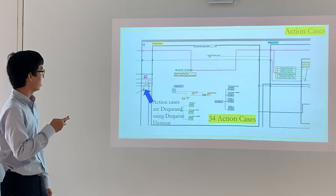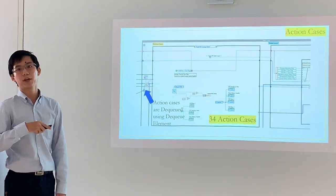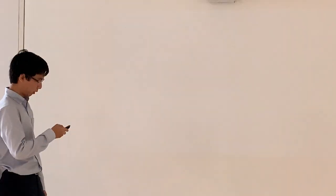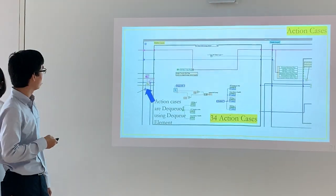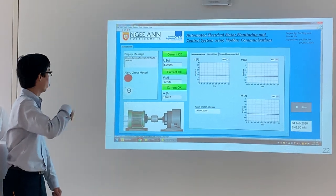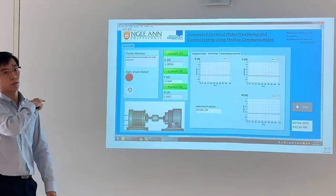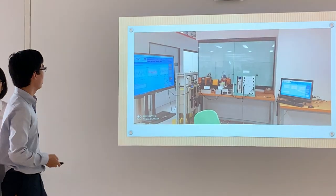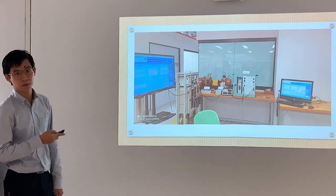We have the action cases. In total in the main program we have 34 action cases. The action cases are dequeued using the dequeue element. This is the front panel of the main program where the motor parameters are being monitored. This is the demo setup. I'll pass the time to Lina now.